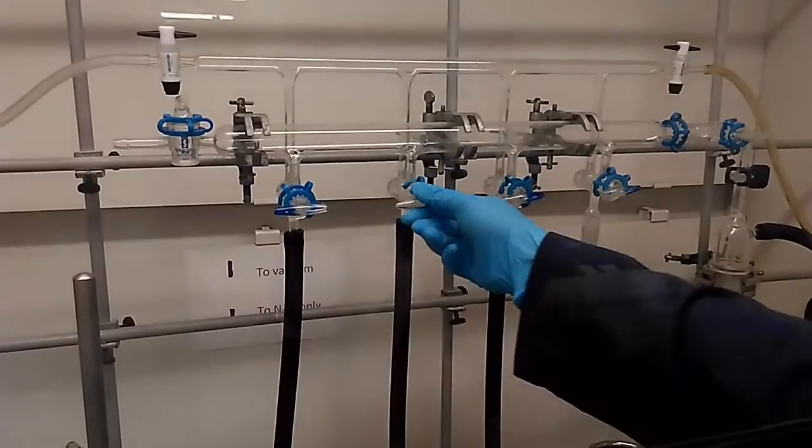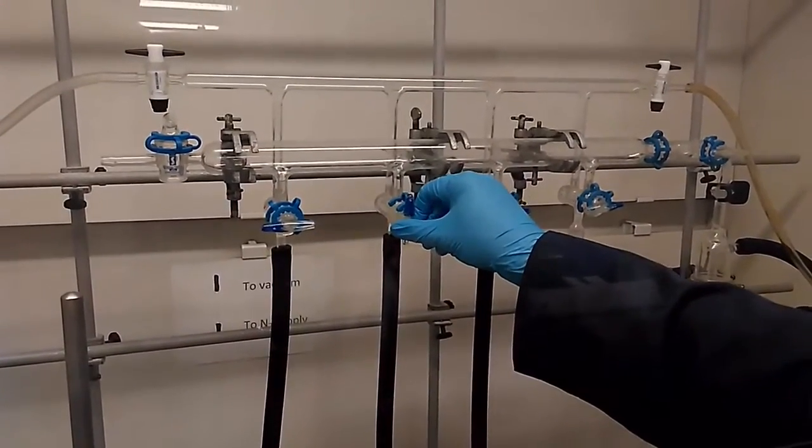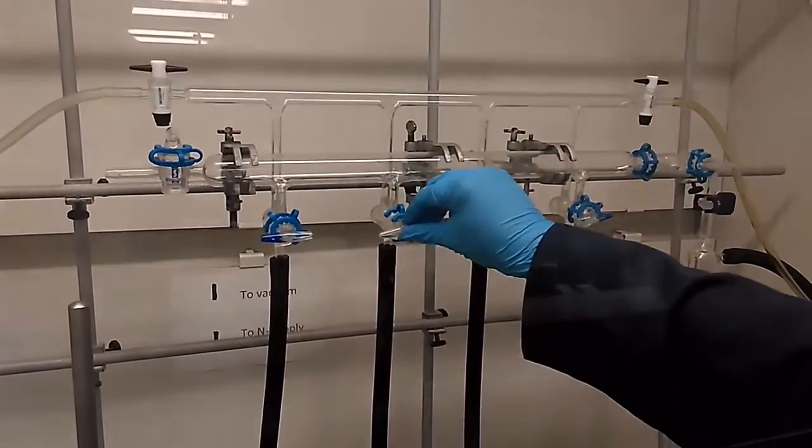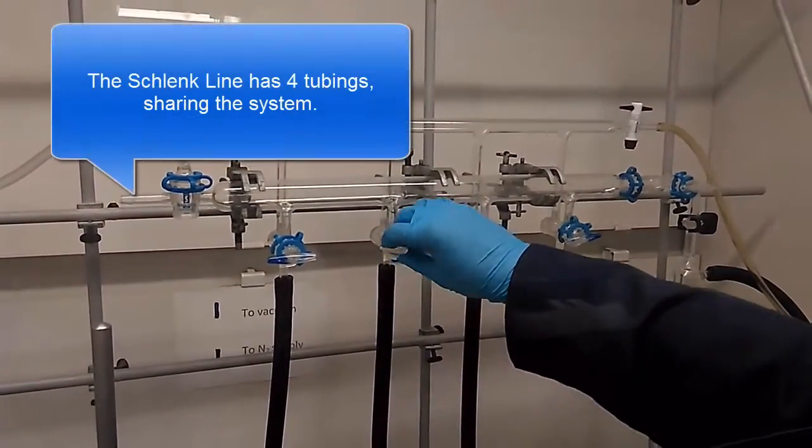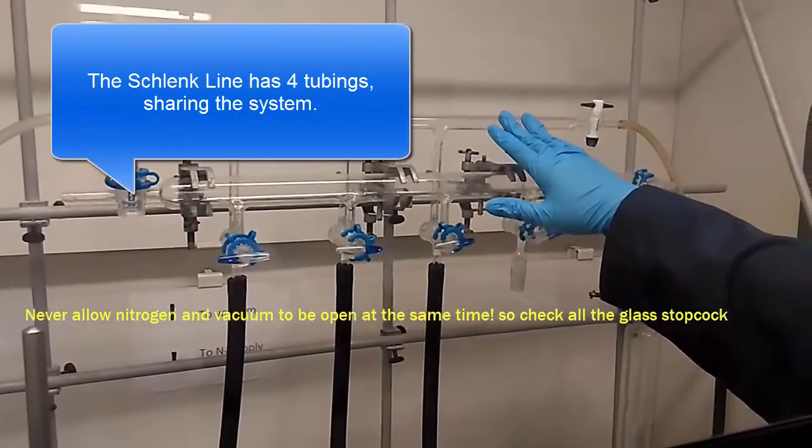If the stopcock goes up, we know that we are connecting it to the vacuum. And if the blue part goes down, we are having nitrogen going in. So here, we do not allow the vacuum or nitrogen to mix together.